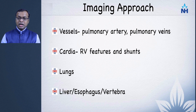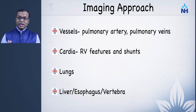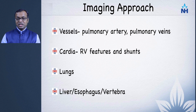Then look at the lungs: look for emphysema, interstitial lung disease, and any pathology that can explain hypoxia. Check the liver because cirrhosis can also cause pulmonary hypertension. Look around the esophagus for venous collaterals or portosystemic shunts. Also examine the vertebrae for extramedullary hematopoiesis, seen in thalassemia or sickle cell disease, which can also cause pulmonary hypertension.